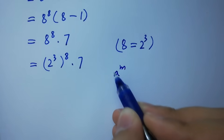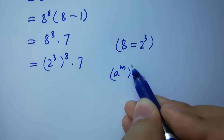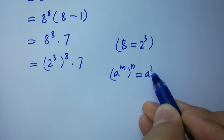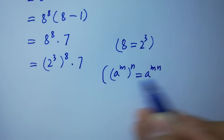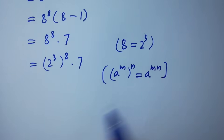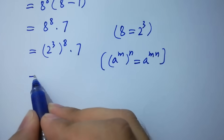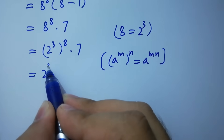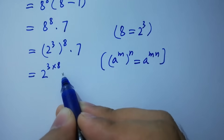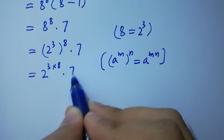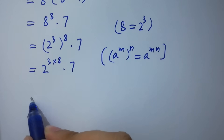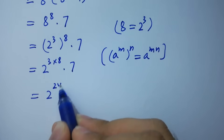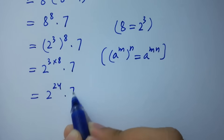Using the rule: a to the power m, to the whole power n, equals a to the power m times n. We have here 2 to the power 3 times 8, times 7. So 2 to the power 3 times 8 is 24, times 7.